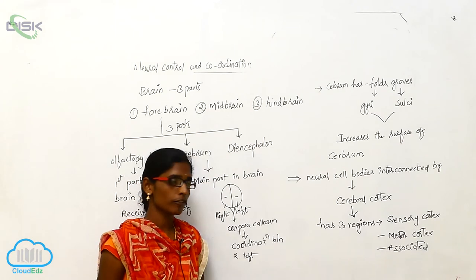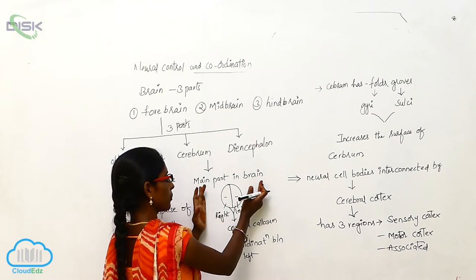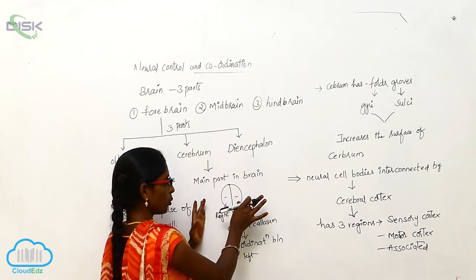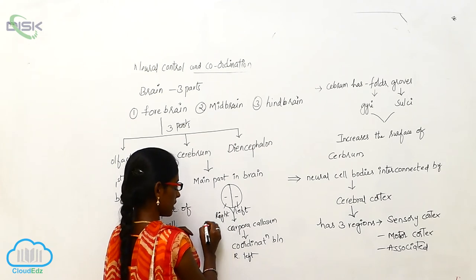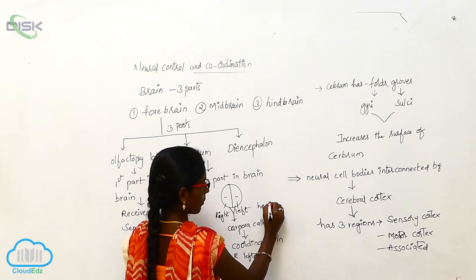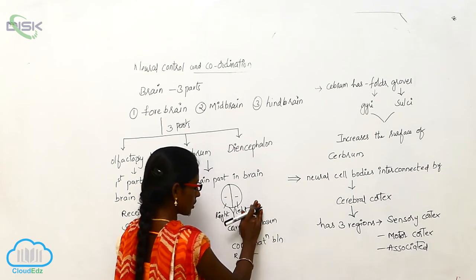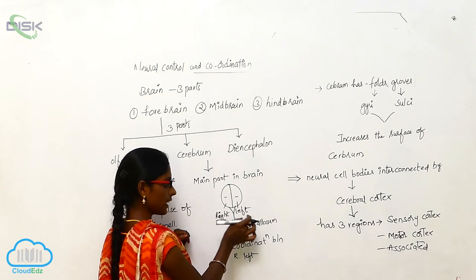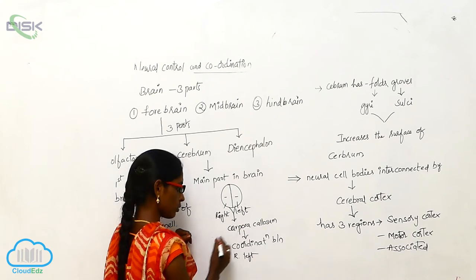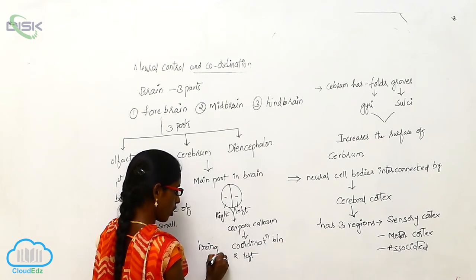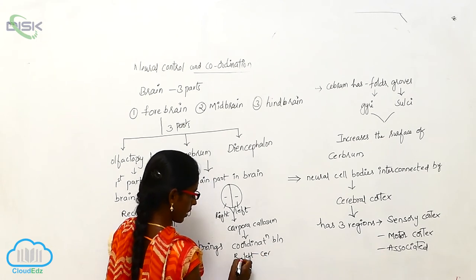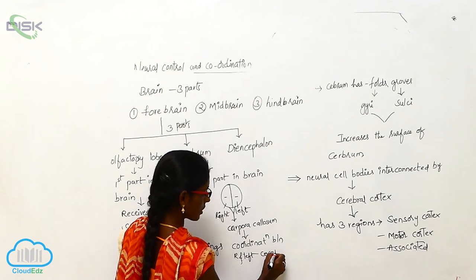The cerebrum is the main part of the brain and divides into two parts: the right and left hemispheres. These are interconnected by the corpus callosum, which brings coordination between the right and left cerebrum.